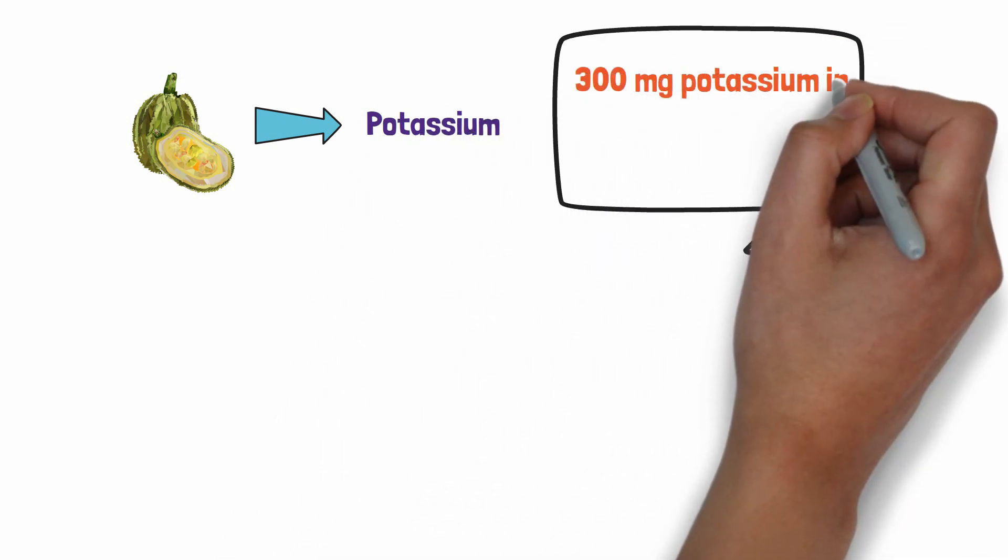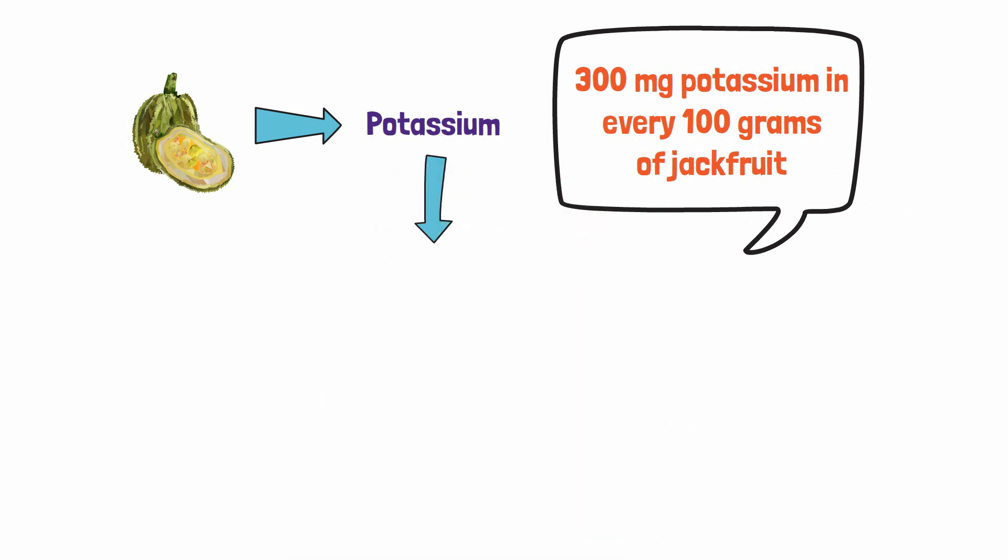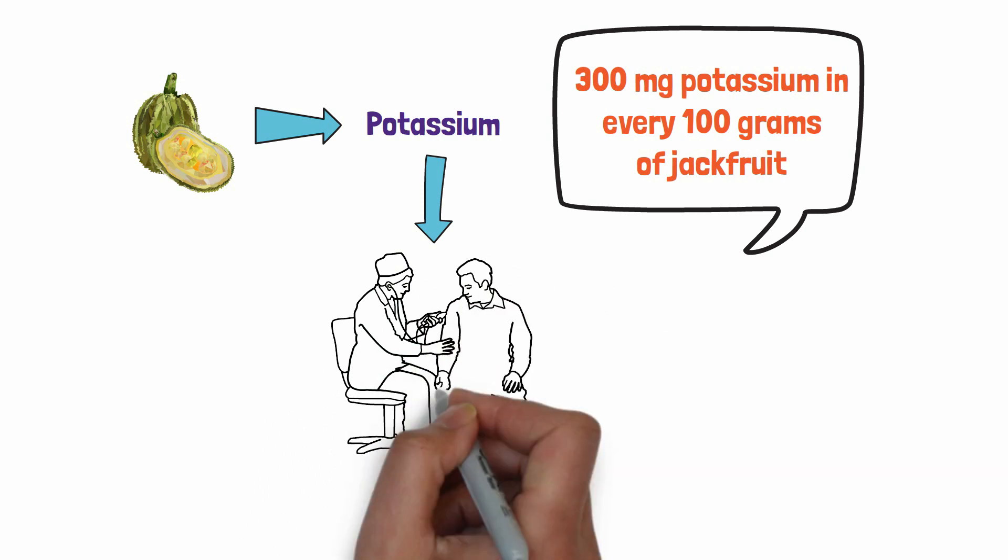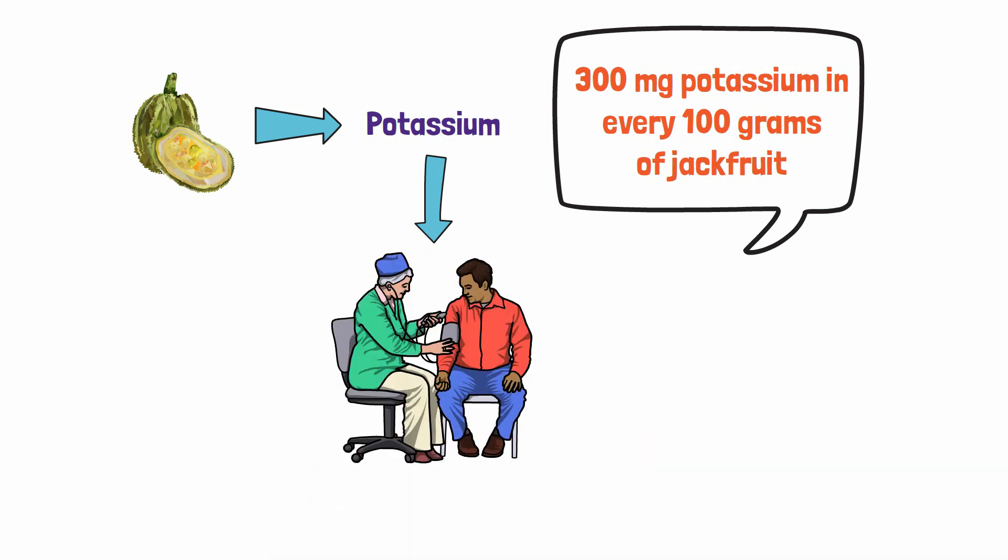Jackfruit is a fantastic source of potassium. Studies show around 300 milligrams of potassium in every 100 grams of jackfruit. Foods rich in potassium have always been helpful for humans as they can play a vital role in controlling blood pressure.